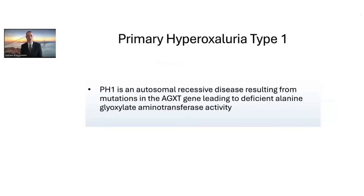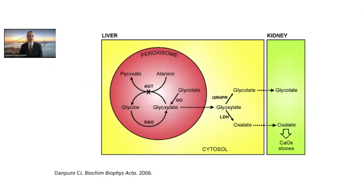Primary hyperoxaluria type 1 is an autosomal recessive disease that results from mutations in the AGXT gene, leading to deficient alanine glyoxalate aminotransferase activity. In the peroxisome of the hepatocyte, this enzyme metabolizes alanine into pyruvate. When it's not able to do so efficiently, there's a buildup of glyoxalate in the peroxisome. Glyoxalate then leaves the peroxisome into the cytosol, where it is converted into oxalate via lactate dehydrogenase. This hepatic overproduction of oxalate is the hallmark of primary hyperoxaluria.